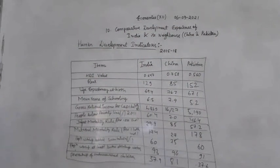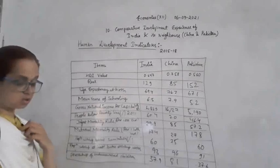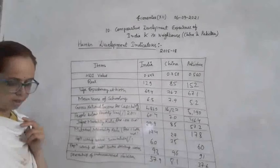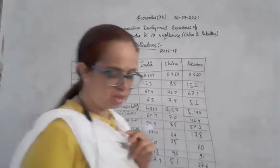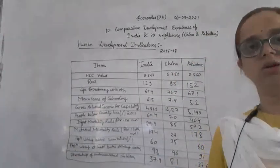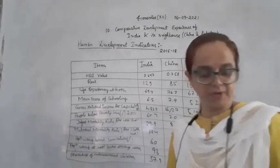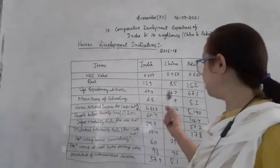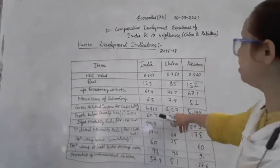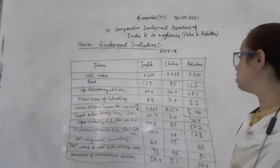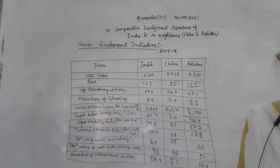The next data is GNP per capita — gross national product and income per capita. Higher per capita GNP plays a major role in increasing the education level. In 2018, China's GNP was 16,127 whereas India's GNP is 6,829 and Pakistan was just 5,190 respectively.